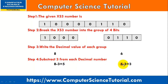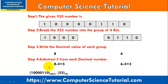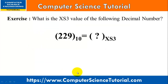Step 4: subtract 3 from each decimal value. So 8 minus 3 equals 5, and 6 minus 3 equals 3. This is our answer. When we convert the given XS3 code into a decimal number it returns 53.